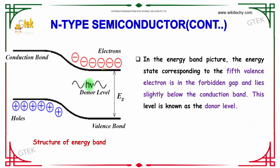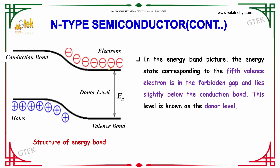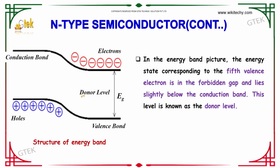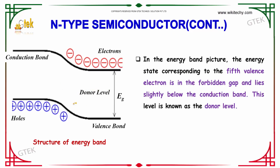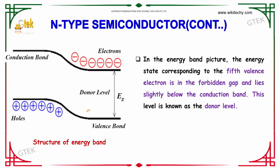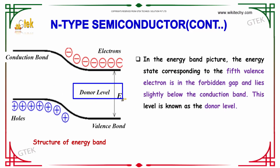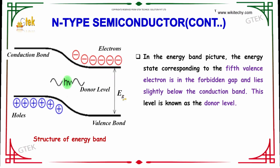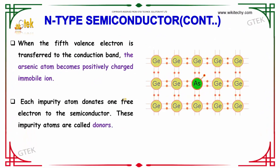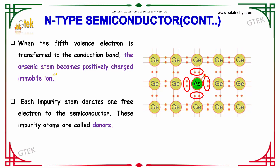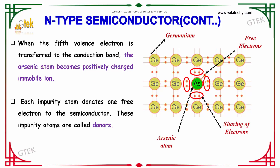In the energy band picture, the energy state corresponding to the fifth valence electron is in the forbidden gap and lies slightly below the conduction band. When the fifth electron is transferred to the conduction band, the arsenic atom becomes a positively charged, immobile ion.